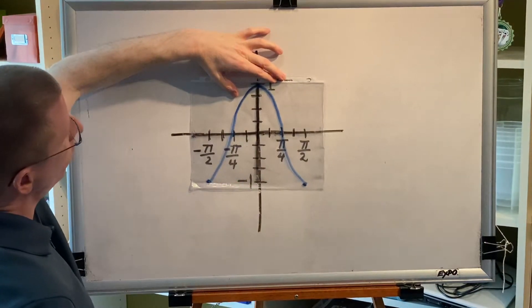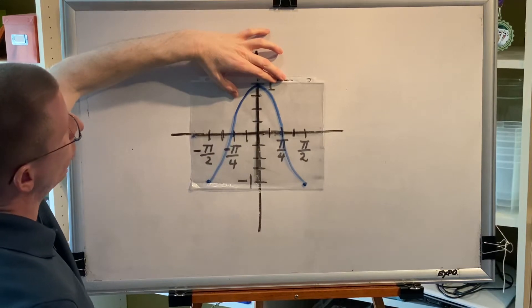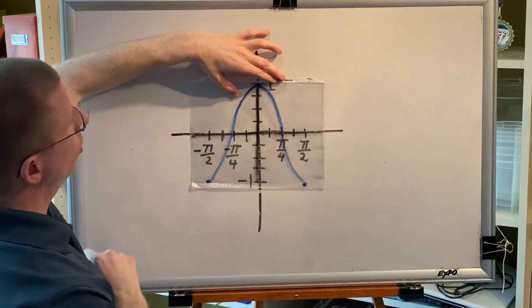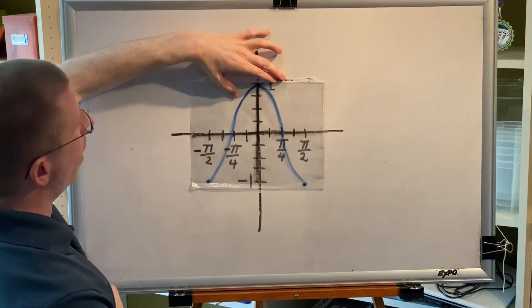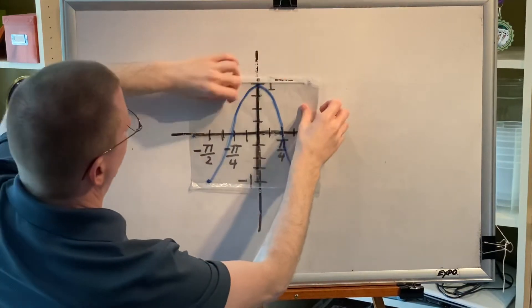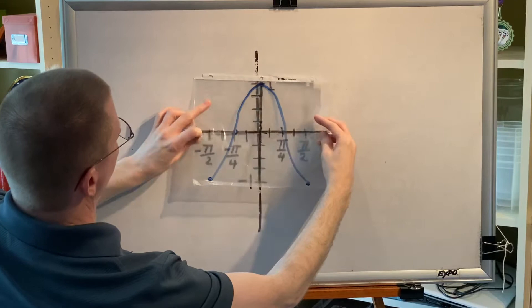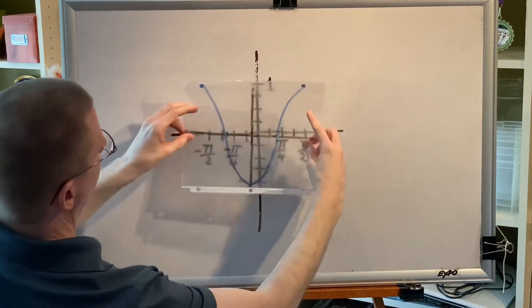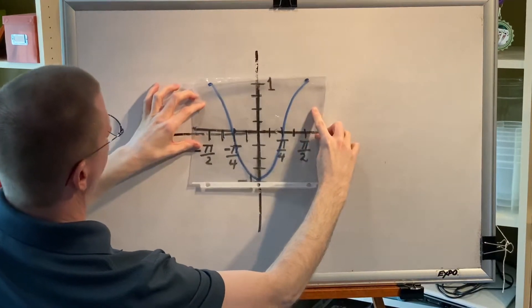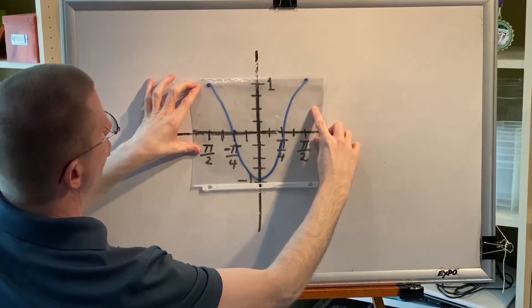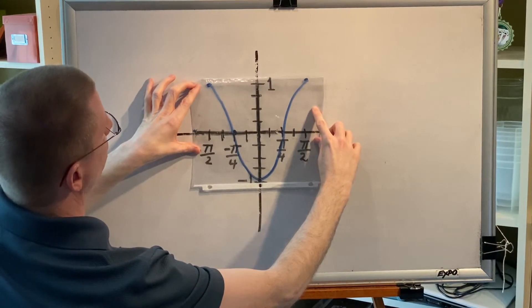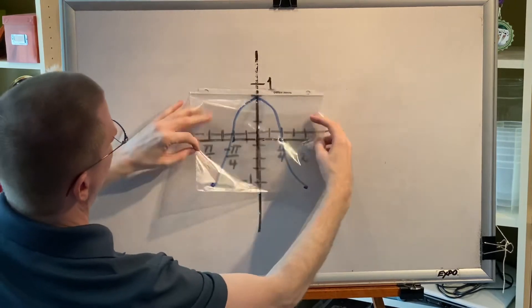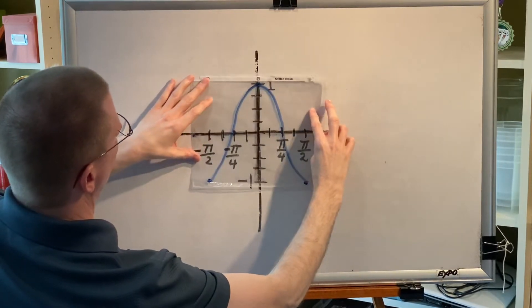The first thing we're going to test for is x-symmetry. We will rotate it around the x-axis. Notice that right now it looks like a mountain. When we spin it around the x-axis, now it looks like a valley. The picture changed — there is no x-axis symmetry. This is the after; this is the before. They are different.